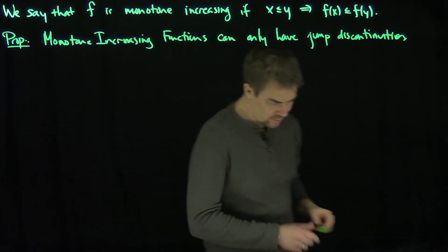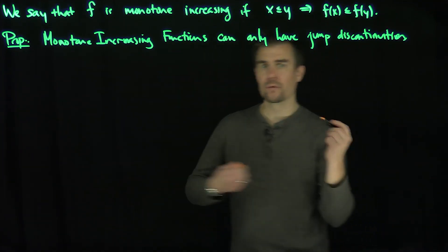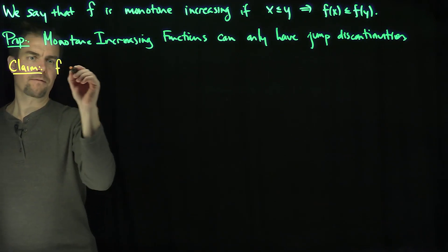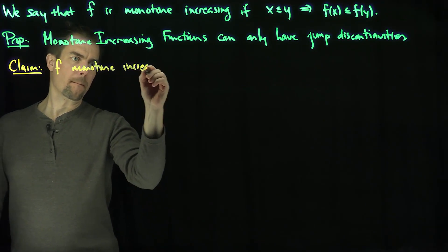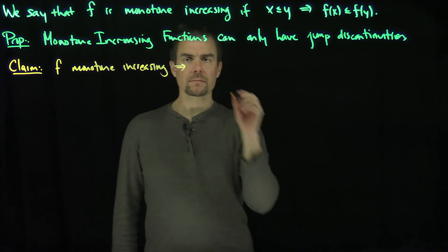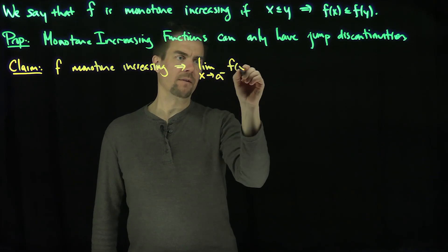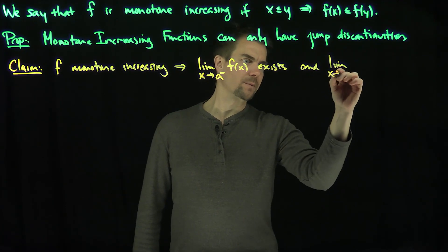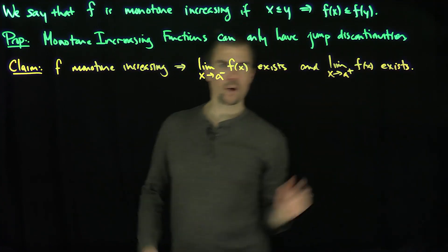Here's the idea. What I'd like to do is prove that a monotone function has right and left limits that exist. So what we're going to do is prove at least this claim: f monotone increasing implies that the limit as x approaches a from the left of f of x exists, and similarly the limit as x approaches a from the right of f of x exists.